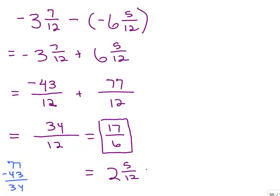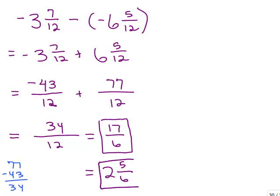Sorry about that — I initially wrote 5 twelfths by mistake. The correct mixed number form is 2 and 5 sixths.